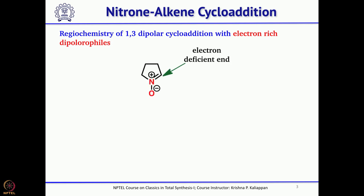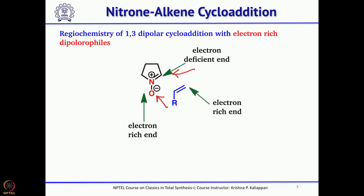When you look at nitrone, nitrone is nothing but if you have an imine and the nitrogen is oxidized — the N-oxide of nitrogen. You know you talk about N-oxide, N-methyl morpholine N-oxide, and so on. Here, if the nitrogen of an imine is oxidized, that is called nitrone. And this nitrone, if you look carefully, has one electron-deficient end and one electron-rich end — it is distributed over 3 atoms. When you do a 1,3-dipolar cycloaddition with an electron-rich alkene, this is the stereochemistry of the product you get.